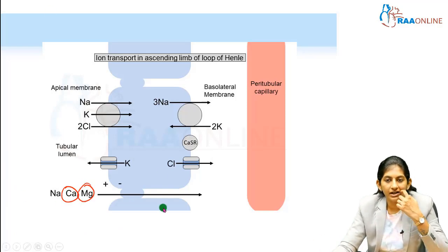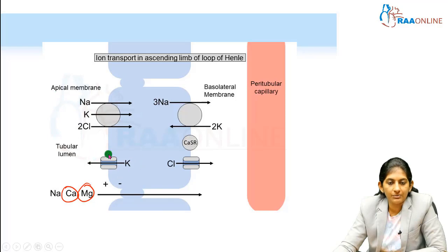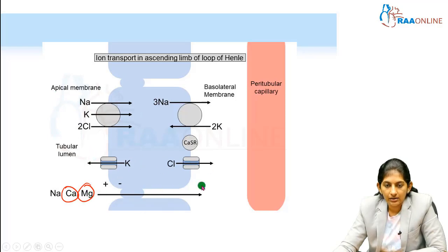There are no separate transporters, but because of the electrochemical gradient created by these transporters — the co-transporter, potassium channel, and chloride channel — calcium and magnesium will passively diffuse.